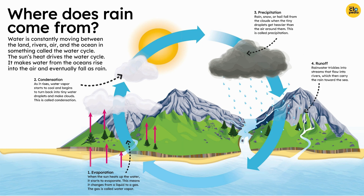4. Runoff. Rainwater trickles into streams that flow into rivers, which then carry the rain toward the sea. 5. Back to the sea. The water returns to the sea or is collected in lakes, where the sun heats it and the whole cycle begins again.